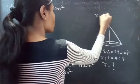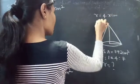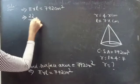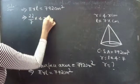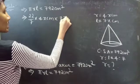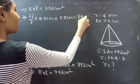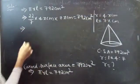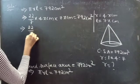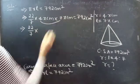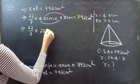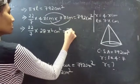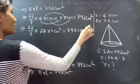We have R equals 4x cm and L equals 7x cm. Taking pi as 22/7: 22/7 into 4x into 7x equals 792 cm². From this we get 22/7 into 28x² cm² equals 792 cm².